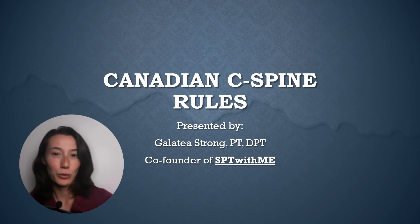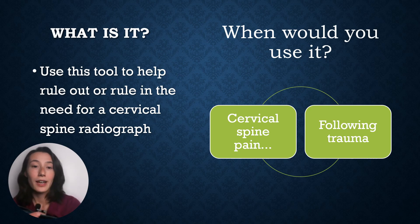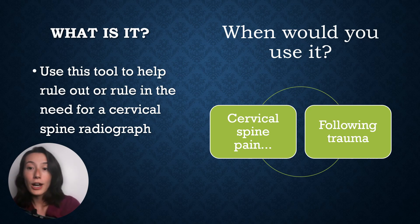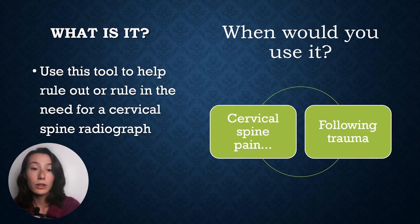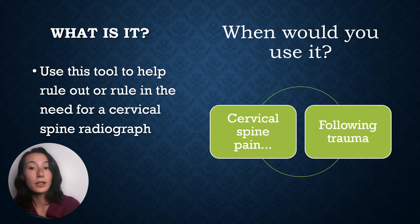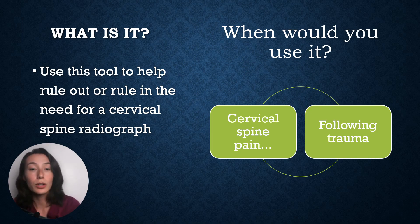Now let's talk about the Canadian C-Spine Rules. What is it and when would we use it? Within the term Canadian C-Spine Rules, it literally says C-Spine, meaning the cervical spine — it's very specific to this region. So if someone is coming in for their ankle or any other body region, this should not be the first thing that comes to mind. The Canadian C-Spine Rules is a flowchart that guides you through a series of steps to help decide whether or not a person should obtain a radiograph, aka an x-ray — essentially assisting you in ruling in or ruling out a cervical spine fracture.